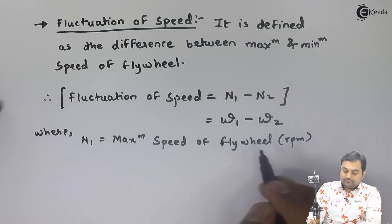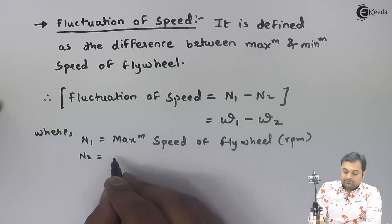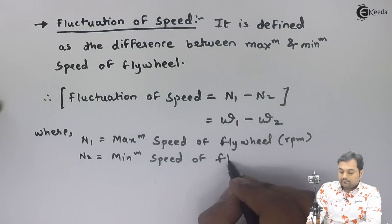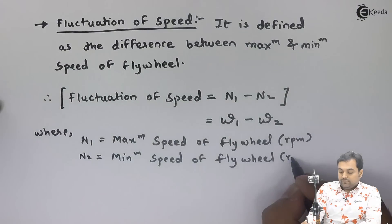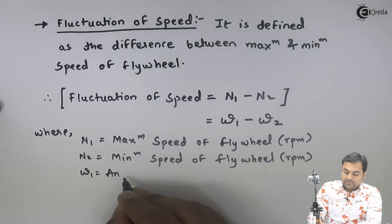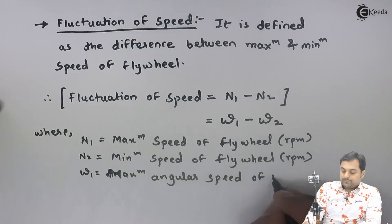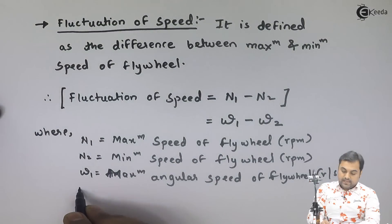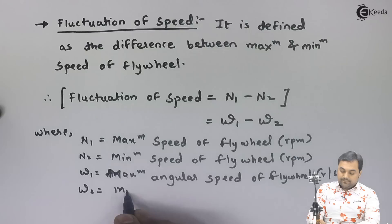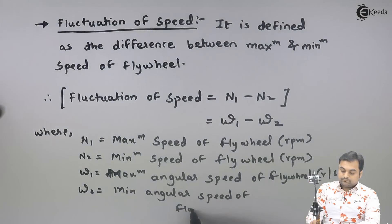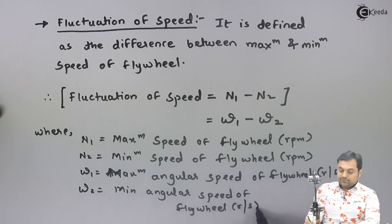n1 is in RPM. n2 is the minimum speed of the flywheel, also in RPM. Omega 1 is the maximum angular speed of the flywheel; its unit is radian per second. Omega 2 is the minimum angular speed of the flywheel, also in radian per second.